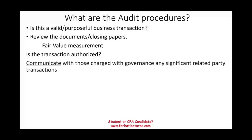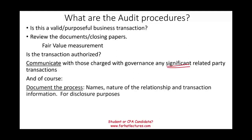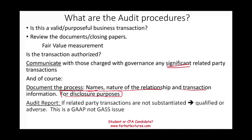Communicate with those charged with governance — basically the board of directors — any significant related party transactions, especially if you suspect fraud or conspiracy. Of course, document the process: record the names, the nature of the relationship, and the transaction information, which is needed for disclosure purposes. Related party transactions are so important they might affect your opinion. If they are not substantiated — if they're inflating figures and represent a large portion of sales or assets — you may not be comfortable issuing an unqualified opinion. You might issue a qualified or even adverse opinion. This is a GAAP issue, not a GAAS issue: a problem with accounting, not with evidence.